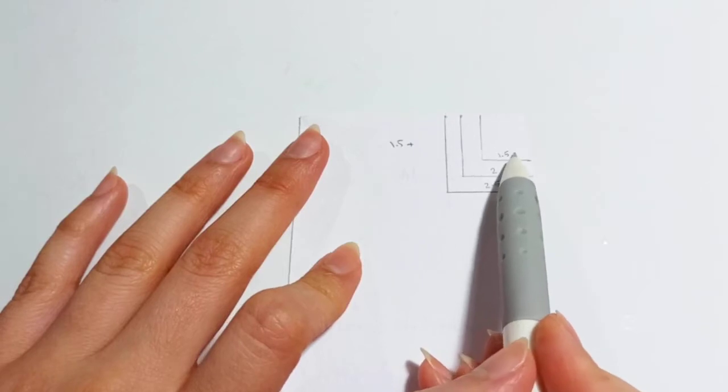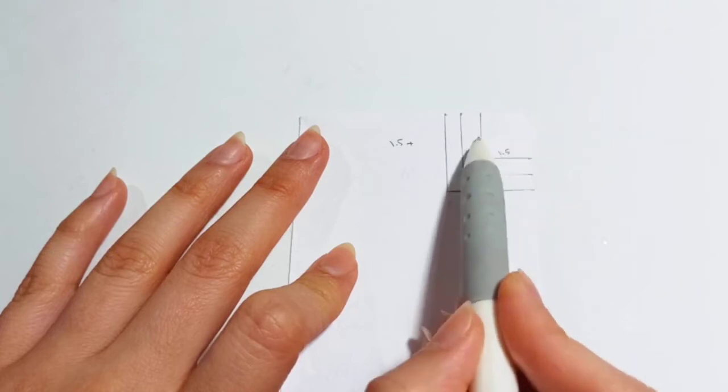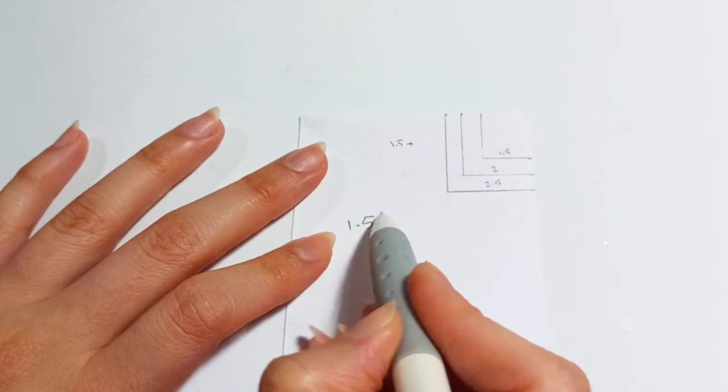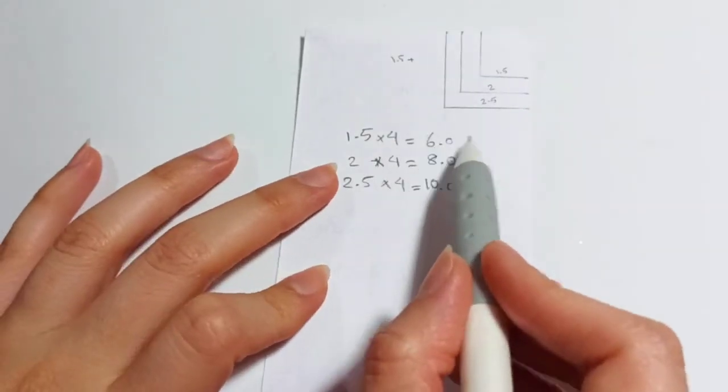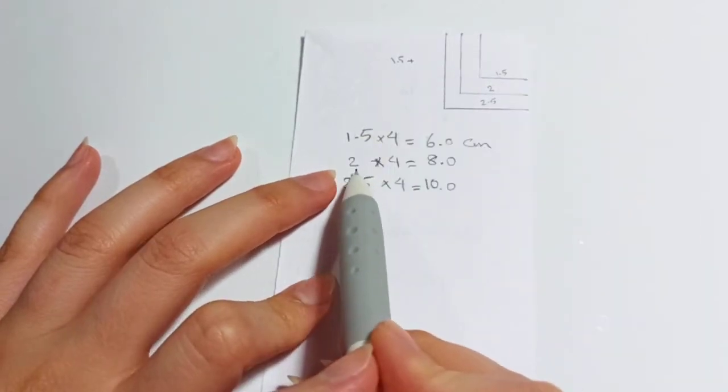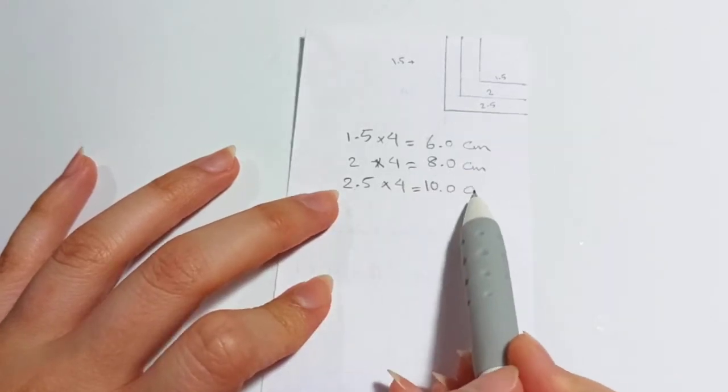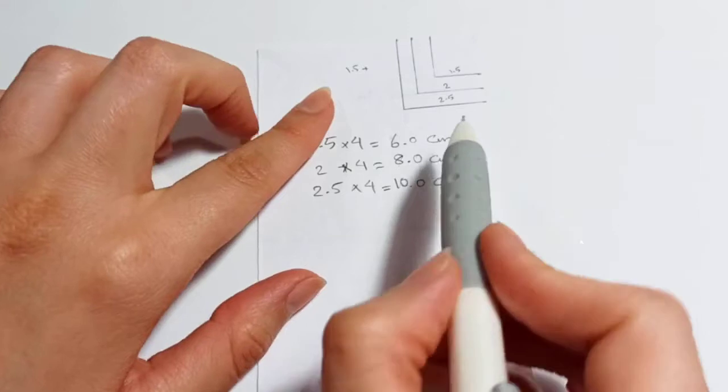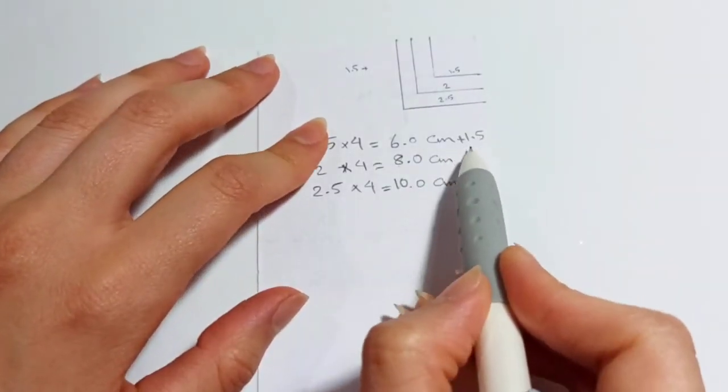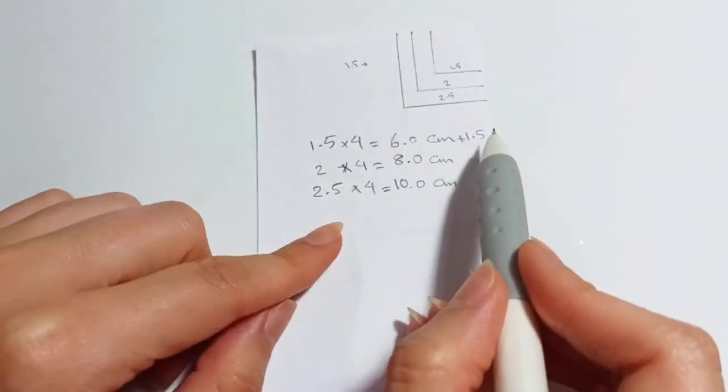We multiply every side length by four because we have four sides for each square. For the first one, that's 6 centimeters. The second square needs 8 centimeters of wire, and for the third one, 10 centimeters.